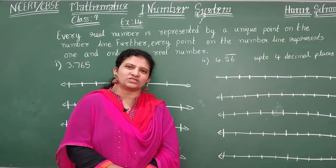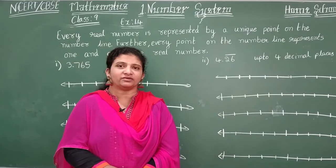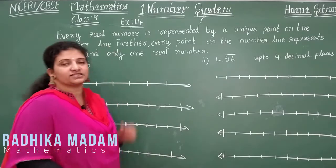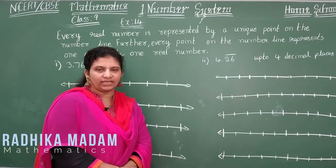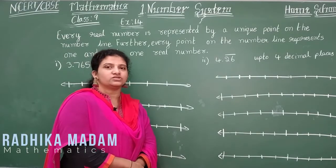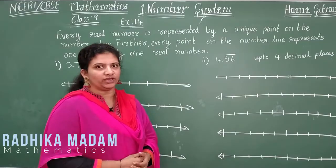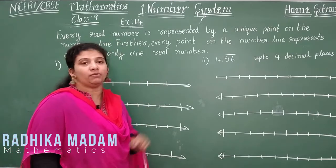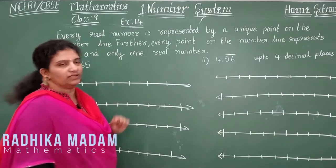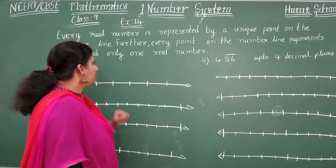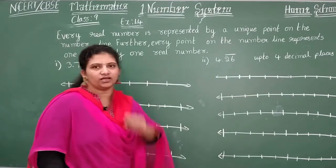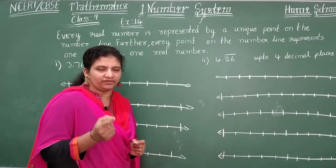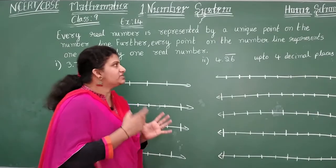Hi children, hello, welcome to your home school this year — another session of your mathematics chapter 1, number system of class 9. Every real number is represented by a unique point on the number line. Further, every point on the number line represents one and only one real number. There are many points on the number line, and every point will represent one or the other real number.